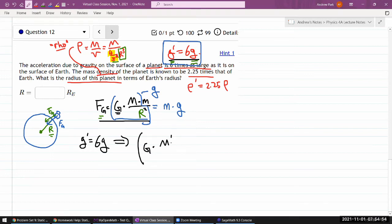I don't think I have that, but let's keep going. Divided by radius of the planet squared. And we want to say this is equal to 6 times the gravitational constant times the mass of Earth divided by radius of Earth squared.